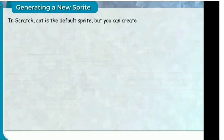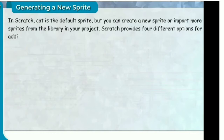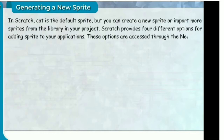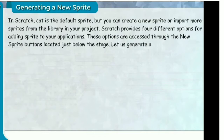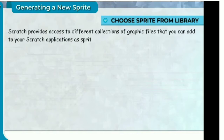Generating a new sprite. In Scratch, the cat is the default sprite, but you can create a new sprite or import more sprites from the library into your project. Scratch provides four different options for adding a sprite to your application. These options are accessed through the new sprite buttons located just below the stage. Choose sprite from library: Scratch provides access to different collections of graphic files that you can add to your Scratch applications as sprites.